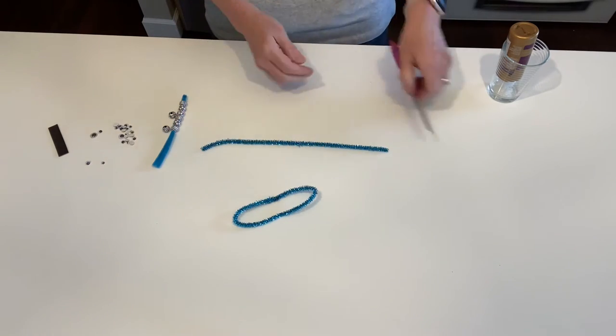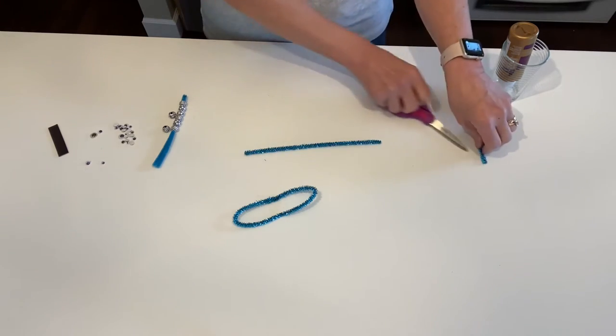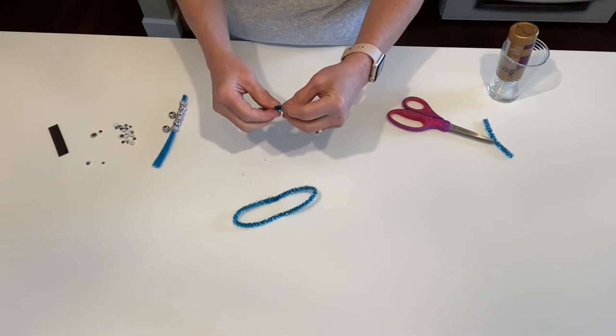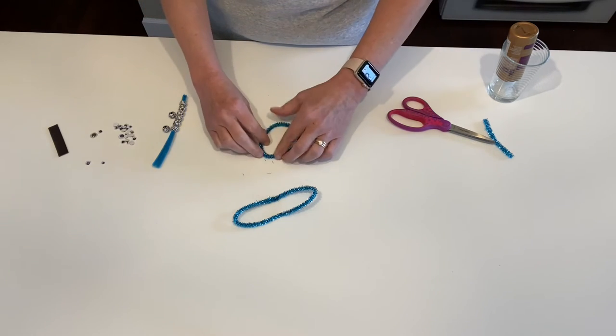With the other pipe cleaner, take your scissors and cut off about two inches. You don't have to measure - it doesn't have to be perfect. Then do the same thing with the longer piece you have left over. Twist those together nice and flat for your second set of wings.